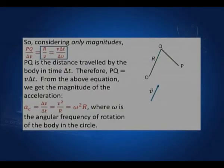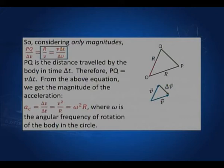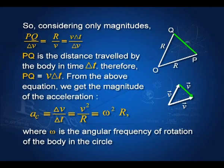Since the triangles are similar, r/v must equal v·δt/δv, so δv/δt equals v²/r. This is called the centripetal acceleration, v²/r. In terms of angular frequency, it can be written as ω²r, where ω is the angular frequency of rotation. This is an important relation and I hope you have understood how this formula is derived.